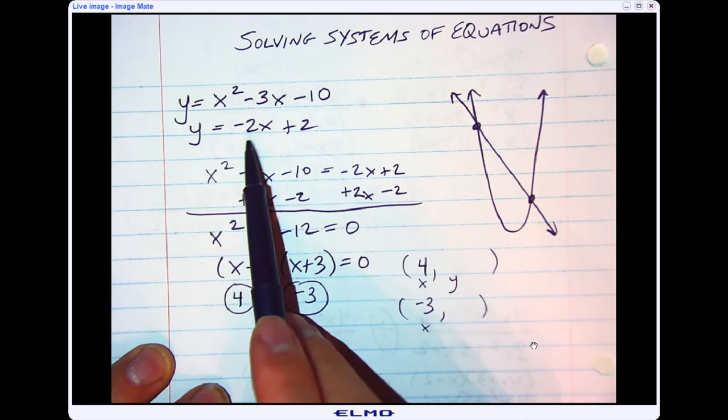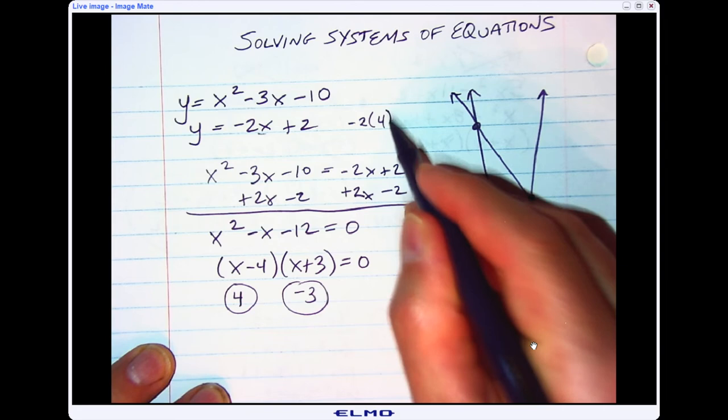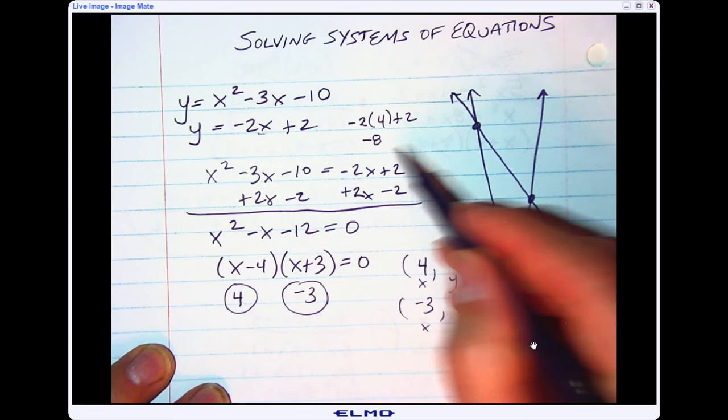So what you do to find the y value is you just put 4 into the equation for x. So if I do this top one, this one right here, I would do negative 2 times 4 plus 2. And 4 times negative 2 is negative 8, and negative 8 plus 2 is negative 6.